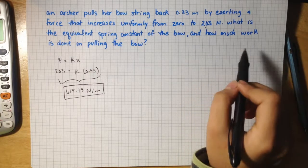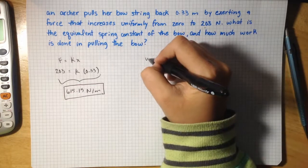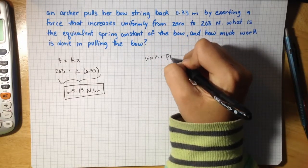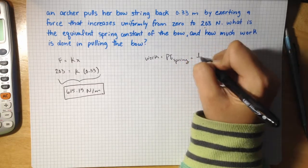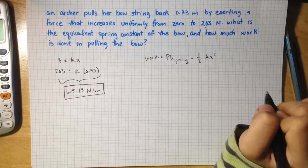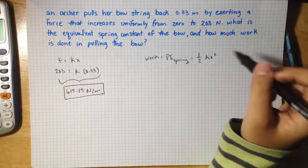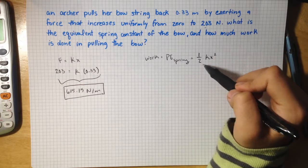The next part of the question asks how much work is done in pulling the bow. Work is equal to the potential energy of a spring which is equal to one-half kx squared. So k is the spring constant, x is the distance, and we multiply those by a half.